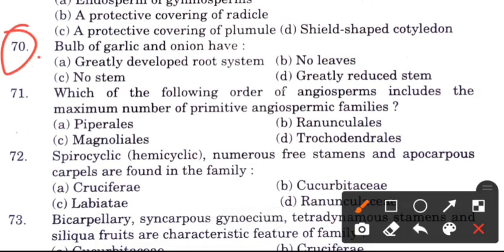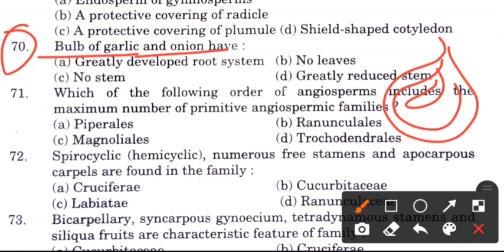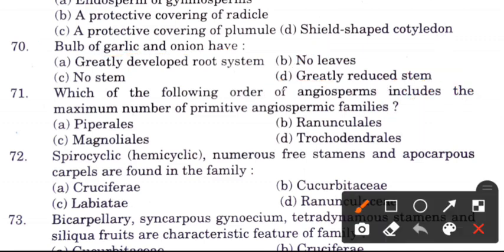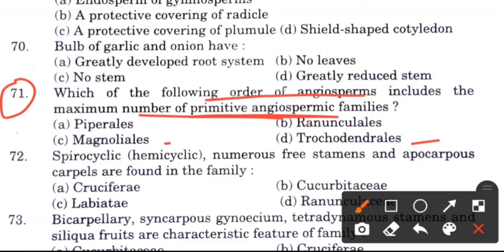Question 69: Bulbs of garlic and onion have greatly reduced stem. Question 70: Which order of angiosperms includes the maximum number of primitive angiosperm families? Options are Pariales, Gentiales, Magnoliales, and Trochodendrales. The answer is C, Magnoliales.